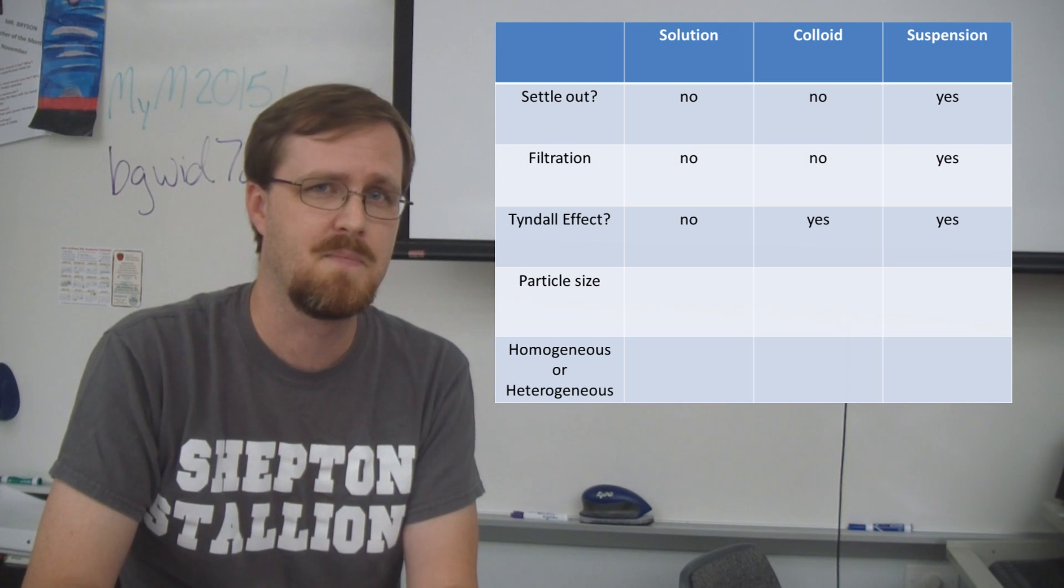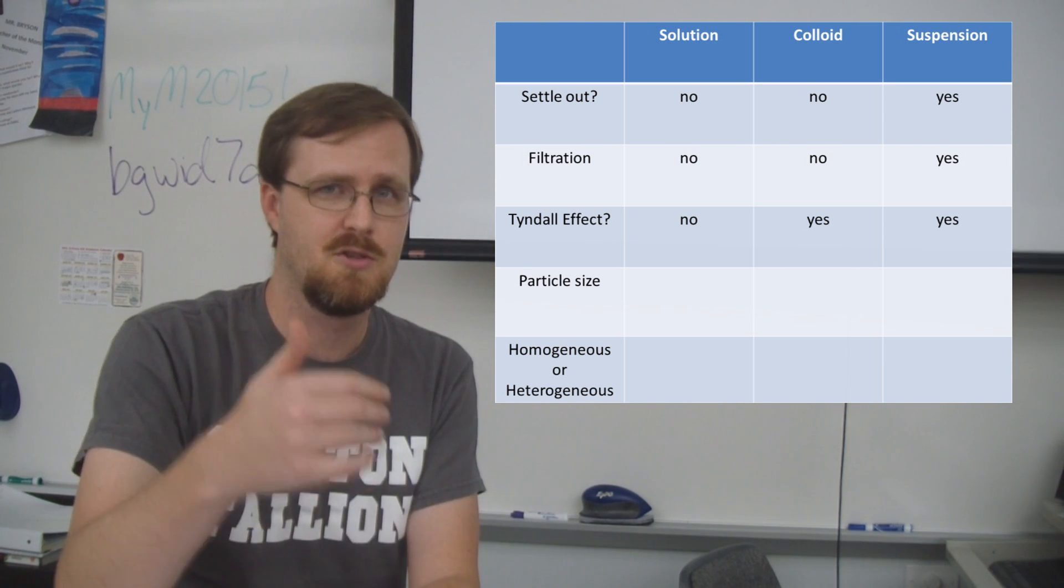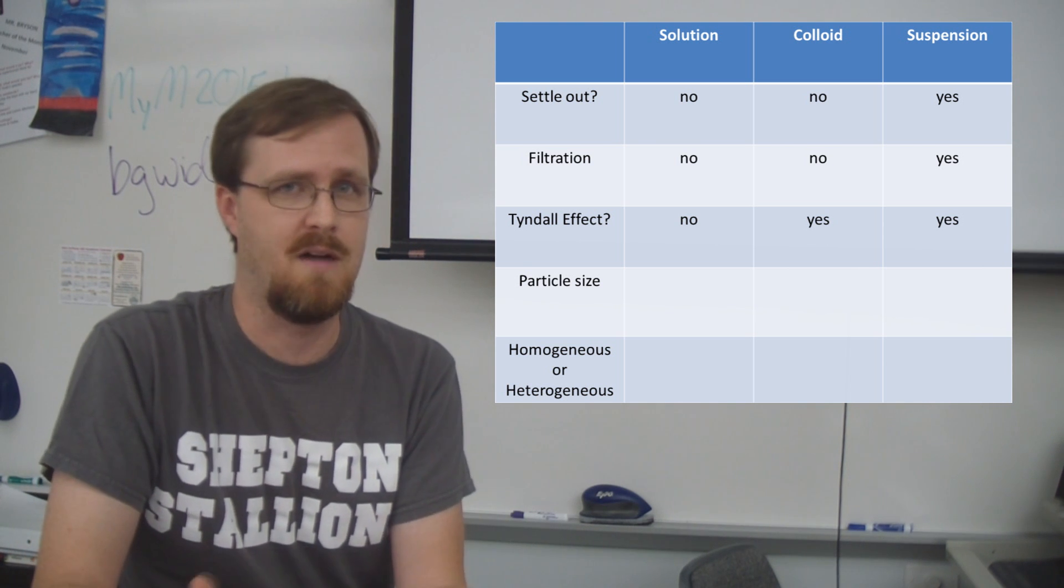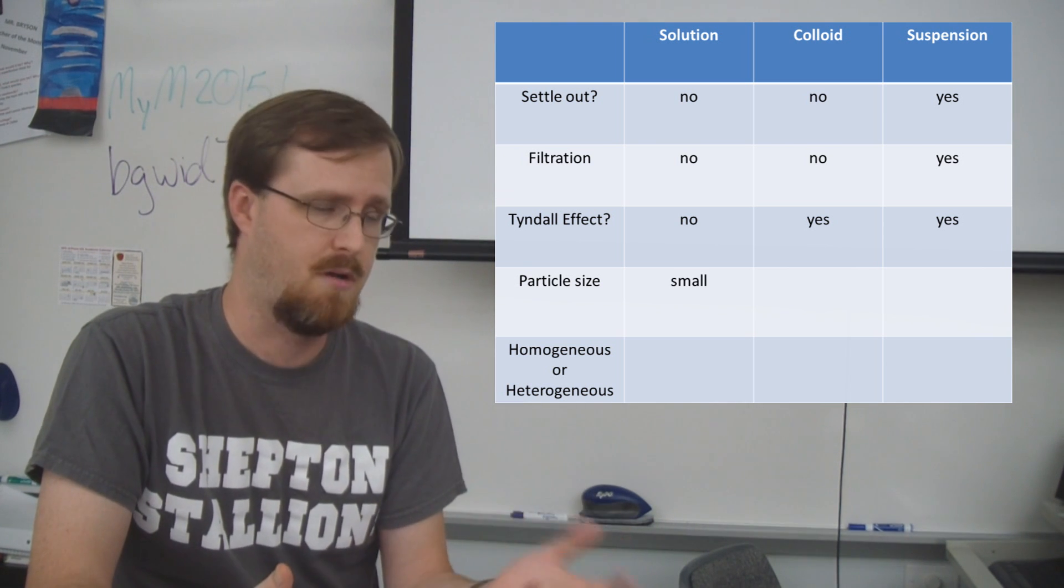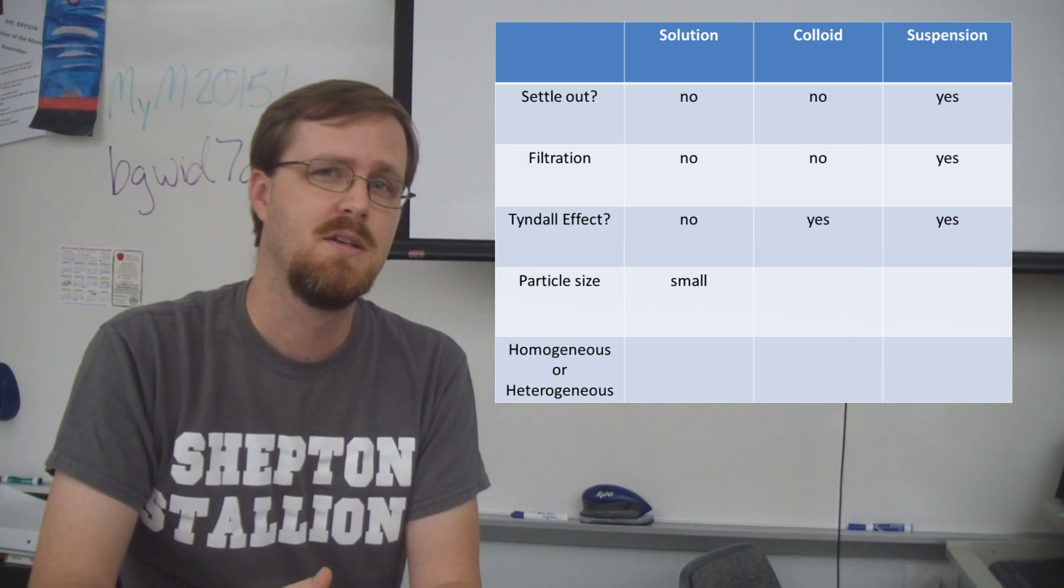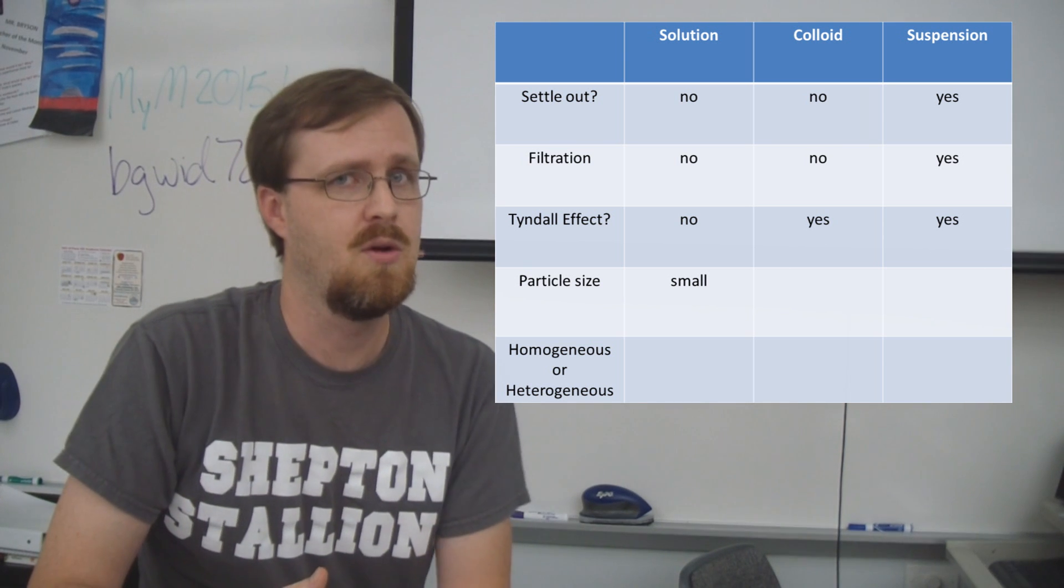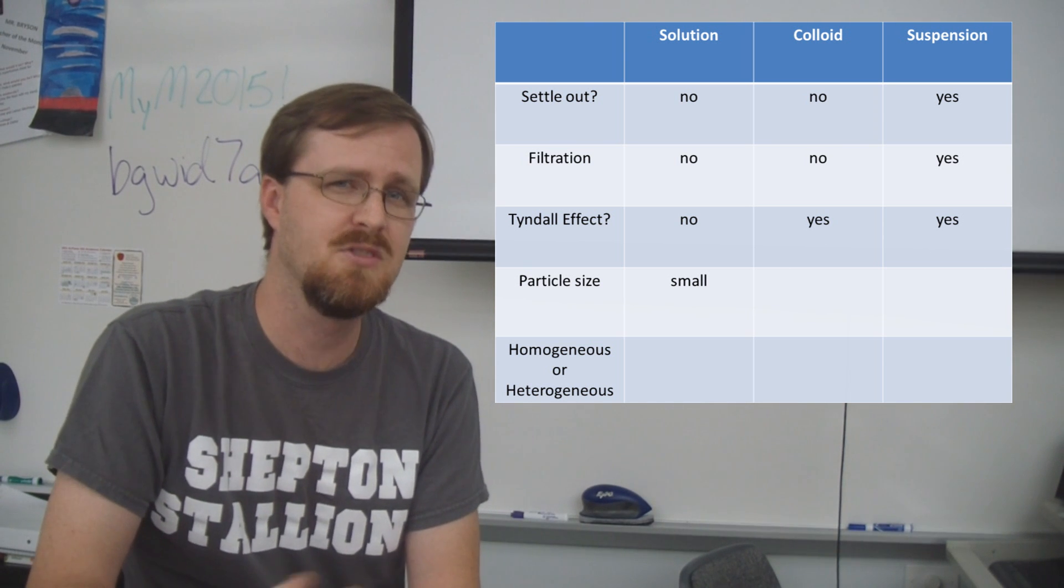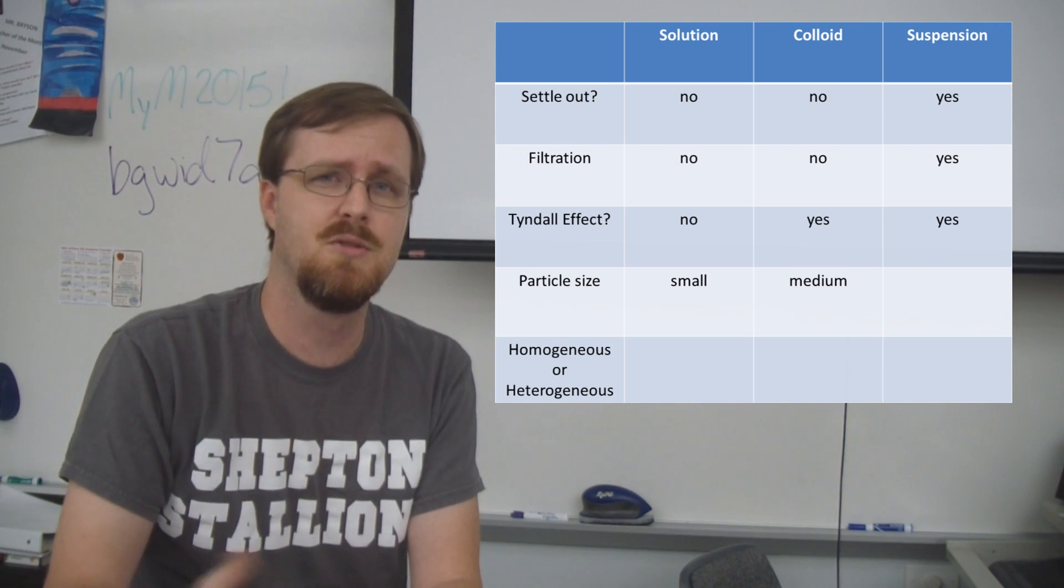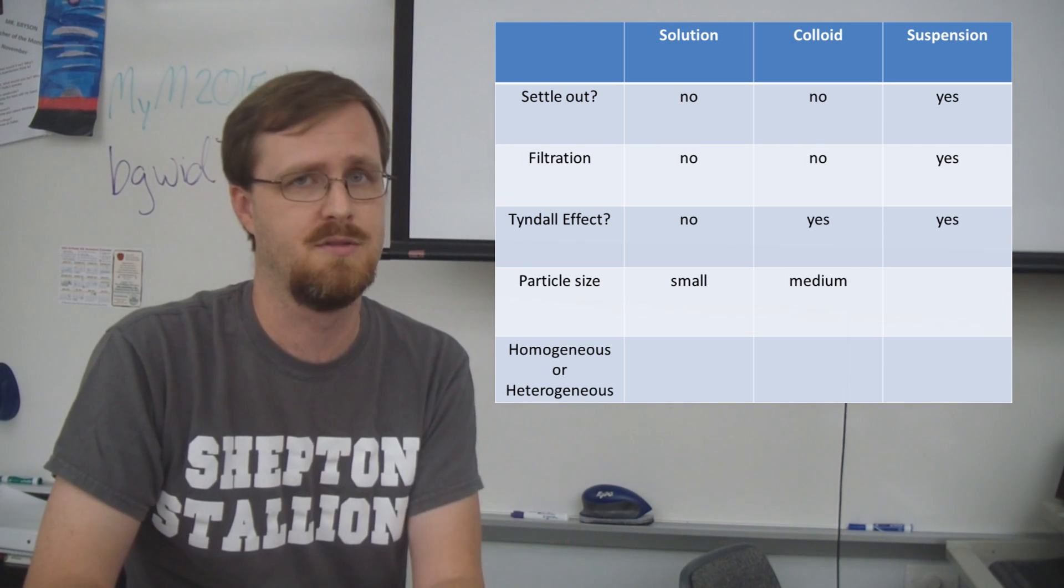Okay, so for the solutions, we can see that it's too small to settle out and too small to show the Tyndall effect, so obviously that's going to be small. For the colloids, they're too small to settle out, but they are still large enough in order to cause the Tyndall effect, so we're just going to call those medium. The suspensions are large enough to settle out and large enough to show the Tyndall effect, so we're going to call those large.